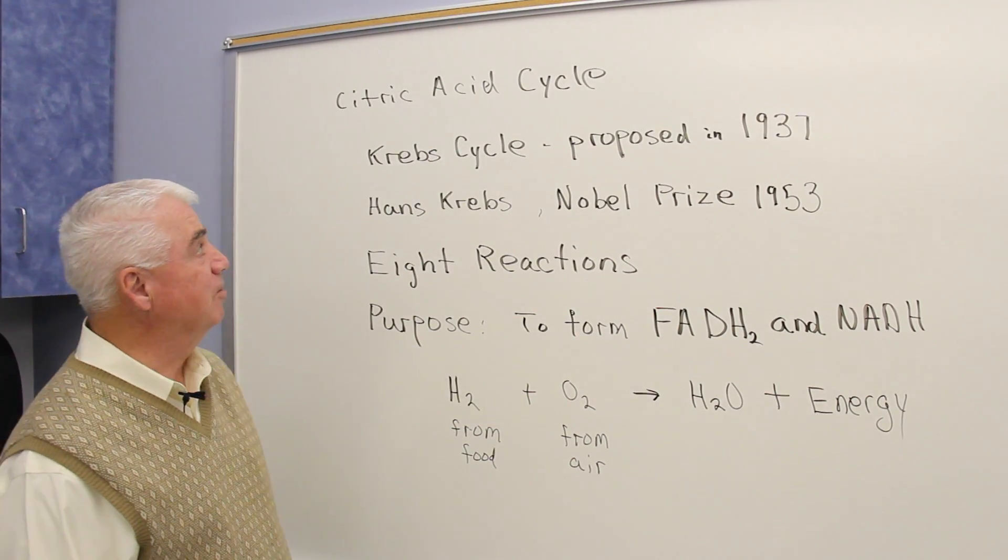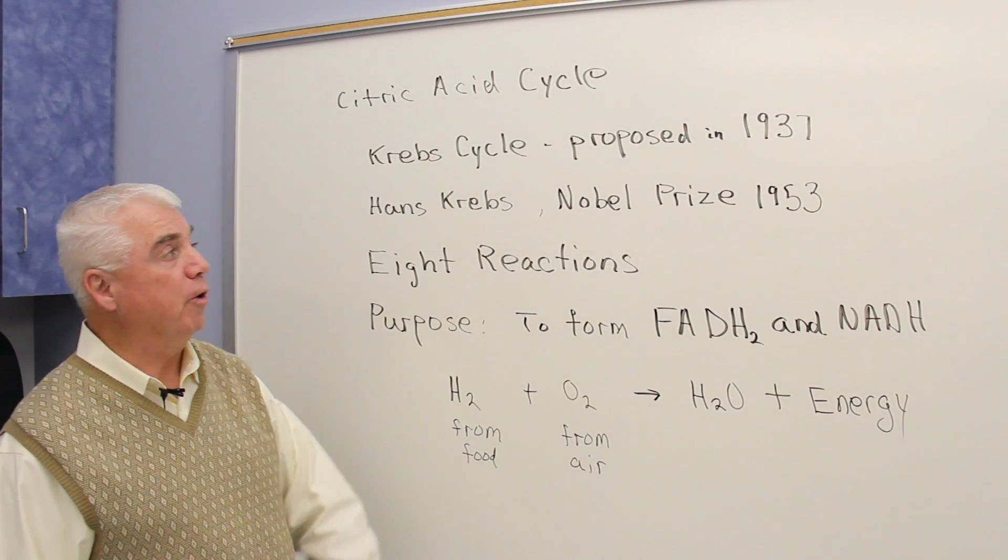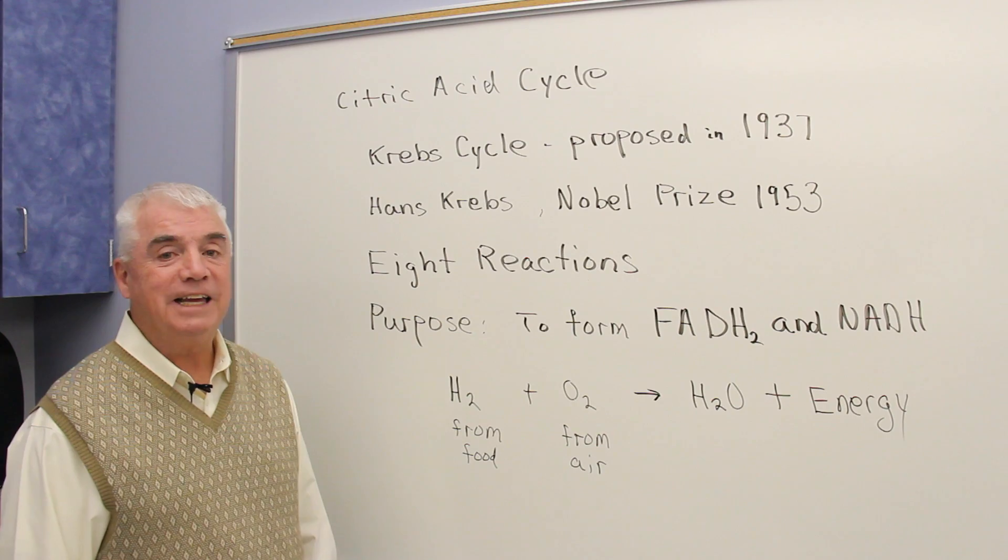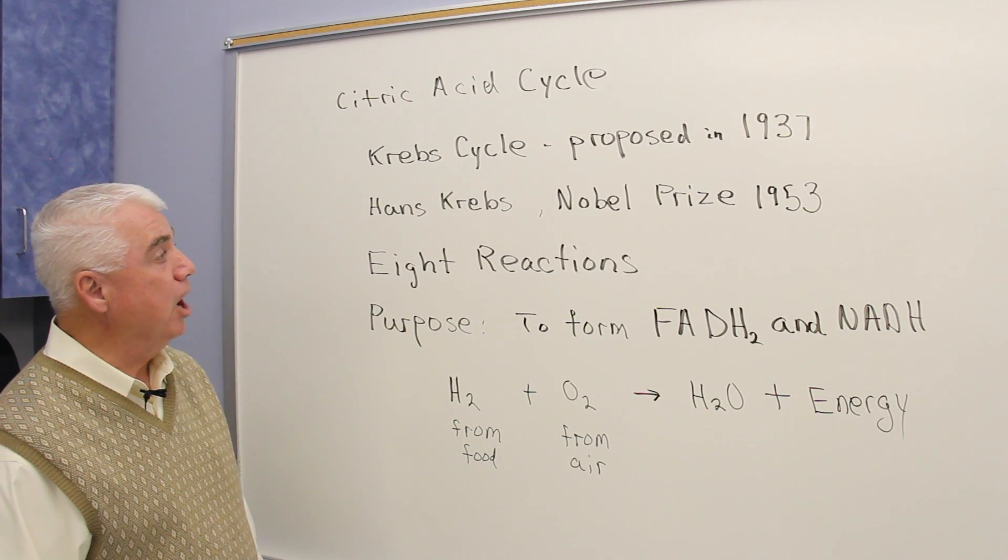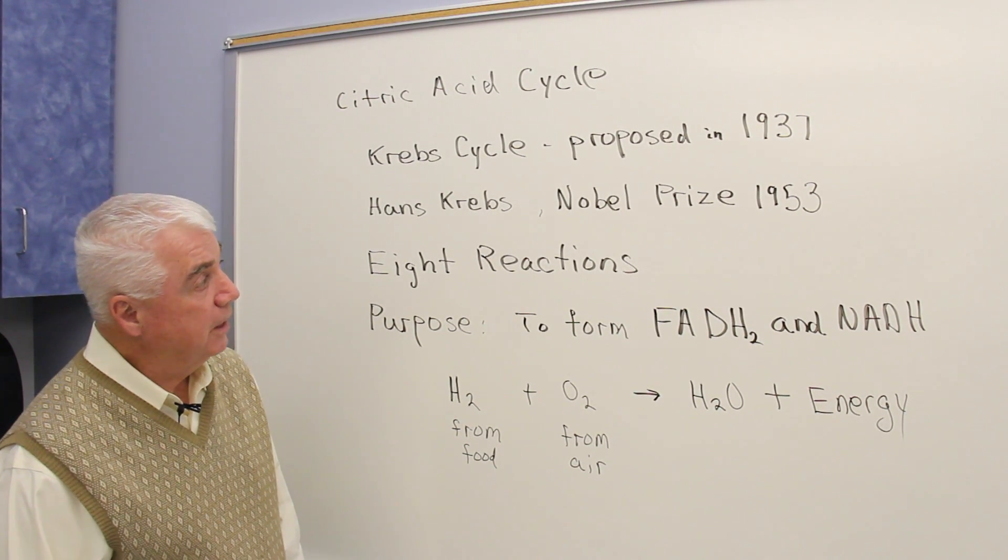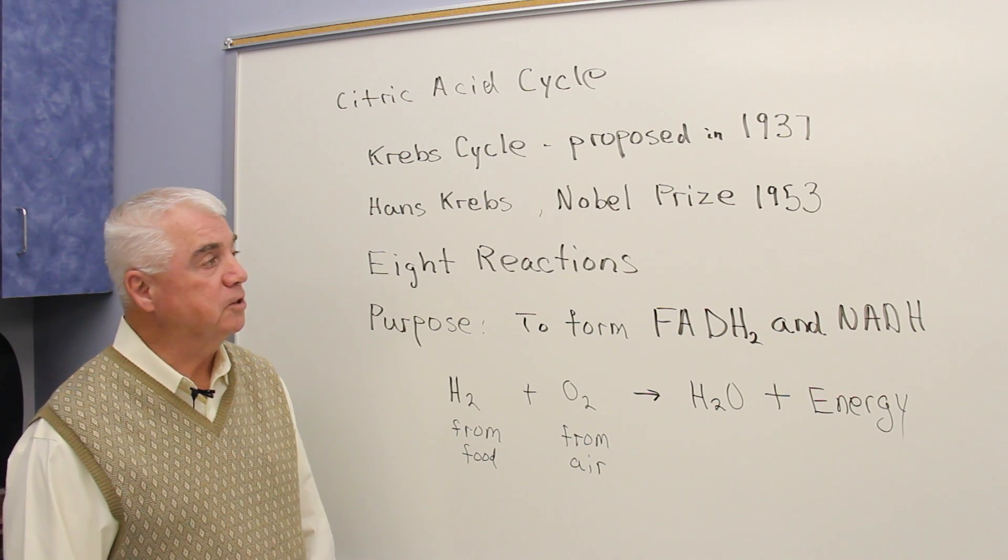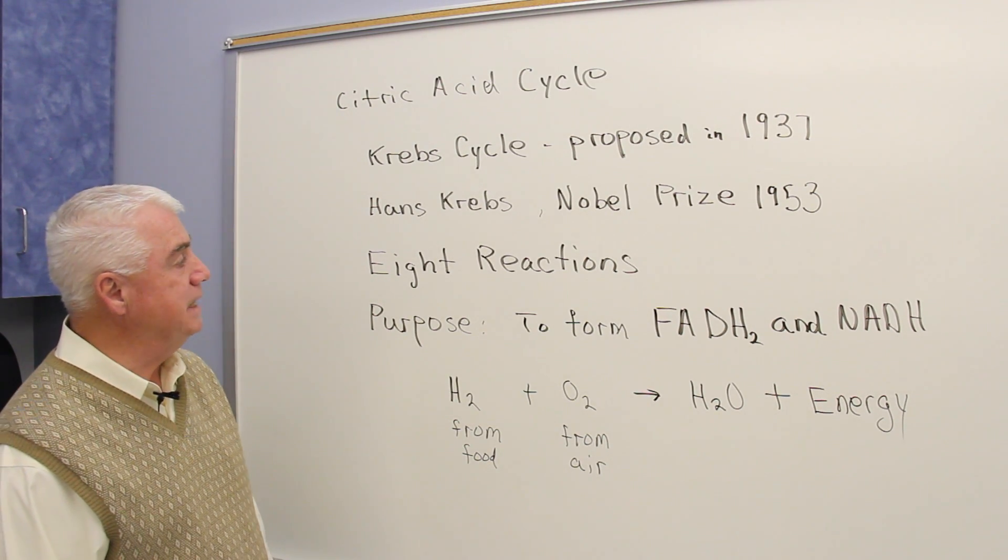The citric acid cycle, also called the Krebs cycle, was proposed in 1937 by Hans Krebs, who received the Nobel Prize in 1953.